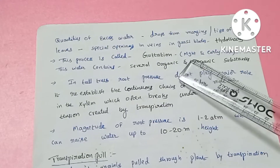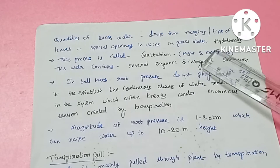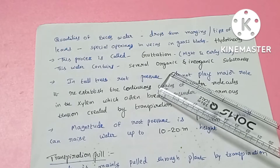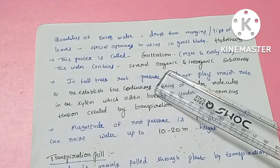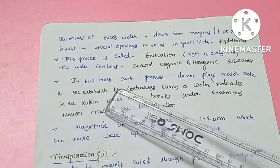This process also occurs at night and in early morning hours. In early morning, there are water droplets visible in the garden, and that is because of guttation.